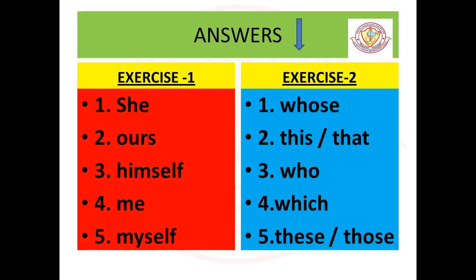I hope you have got the answers. Answers are here. Exercise one: first — she; second — us; third — himself; fourth — me; fifth — myself. Answers for exercise two: first — whose; second — this or that; third — who; fourth — which; fifth — these or those. If you have got all the answers correct, pat your back and say very good.